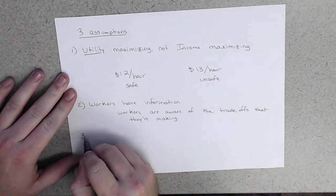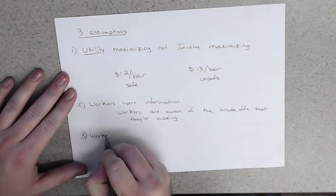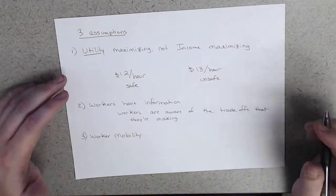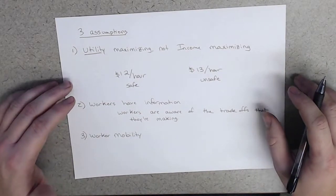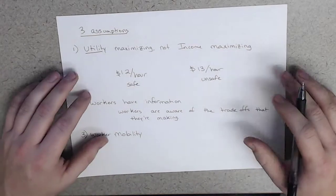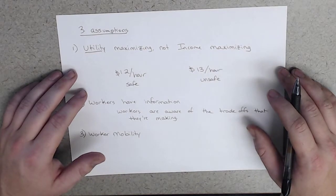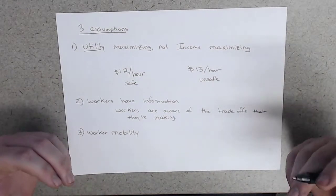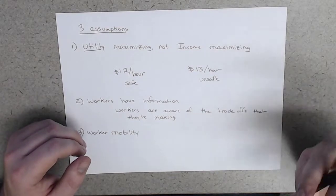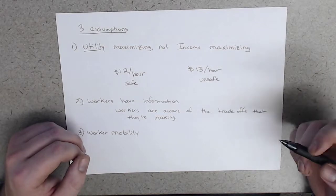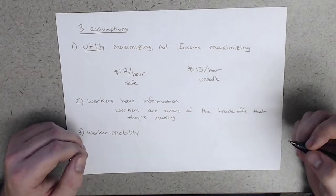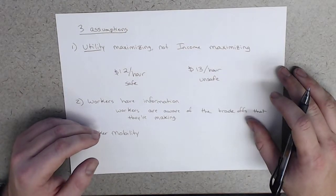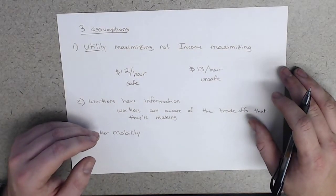The third assumption has to do with worker mobility. We assume that workers have a range of jobs from which to choose from, so they have other options should they not like their current combination of wages and work environment. For most people this assumption holds true, but there are millions of people in rural areas where this simply isn't the case. Compensating wage differentials will only arise when workers have a choice between working in a safe job and working at a risky job. If all the jobs they can realistically get are risky, then no compensating wage differential will actually arise.